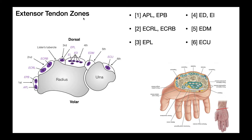In this video, we're going to talk about what's called the extensor tendon zones. Here we're referring to muscles whose muscle bellies are actually in the posterior compartment of the forearm, but their tendons extend across the wrist into the hand to exert various functions there.